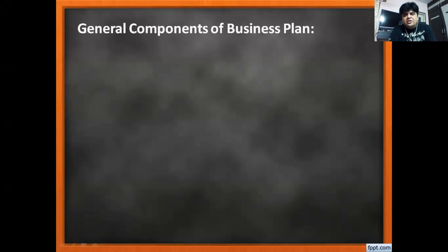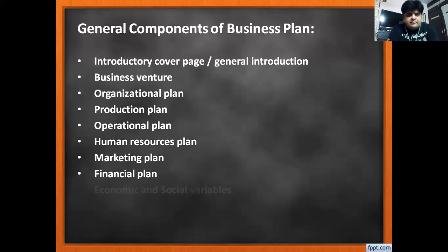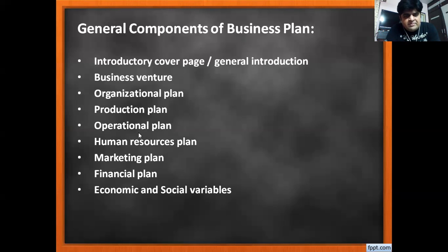Today we are going to understand the general components of a business plan, which are as follows: introductory cover page and general introduction, business venture, followed by six main plans — organizational plan, production plan, operational plan, human resource plan, marketing plan, and financial plan. These are the six major plans, and then economy and social variables.